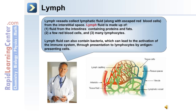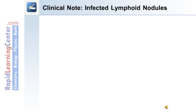Lymph vessels collect lymphatic fluid along with escaped red blood cells from the interstitial space. The fluid itself is composed of: fluid from the intestines which can contain proteins and fats, a few red blood cells, and many lymphocytes. Lymph fluid can also contain bacteria, which can lead to activation of the immune system through presentation to lymphocytes by specialized antigen-presenting cells.